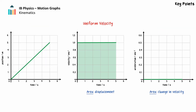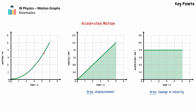Here is a final summary of the key understandings needed about motion graphs. For uniform motion, a position-time graph is a straight line, the velocity-time graph is a horizontal line, and the acceleration-time graph is a horizontal line along the time axis. The area under the velocity-time graph equals the object's displacement. For non-uniform motion with uniform acceleration, a position-time graph is a curved line, the velocity-time graph is a straight line, and the acceleration-time graph is a horizontal line. The area bounded by the velocity-time graph is again the displacement, and the area bounded by the acceleration-time graph is the change in velocity.